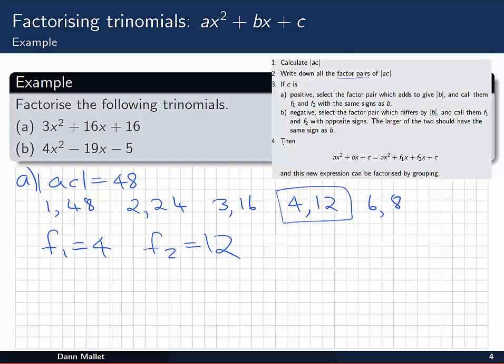Then we move to step 4 and we write our quadratic out again. 3x² + 16x + 16 is going to be equal to 3x² + 4x + 12x + 16.